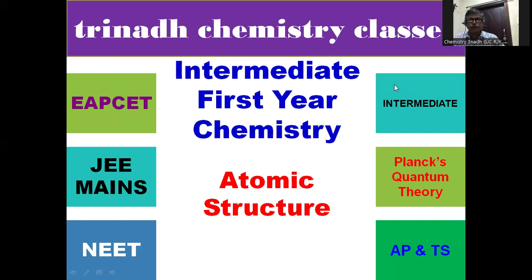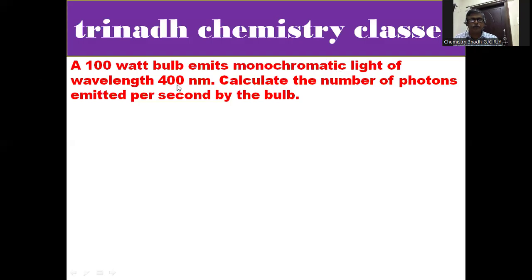Thank you for watching Trenad Chemistry classes. Please like the video, share and subscribe to the channel. The question is: A 100 Watt bulb emits monochromatic light of wavelength 400 nanometers. Calculate the number of photons emitted per second by the bulb.